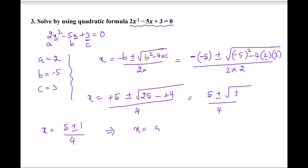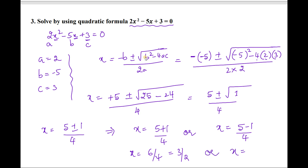Therefore x = (5 + 1)/4 = 6/4 = 3/2, or x = (5 − 1)/4 = 4/4 = 1. So x = 1 or x = 3/2. The key steps are: find a, b, c; write the quadratic formula; substitute the values; then simplify. Identifying the coefficients a, b, and c correctly is the most important step.